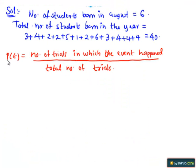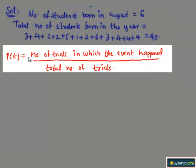We know that the probability of any event P of E equals to number of trials in which the event happened divided by total number of trials.